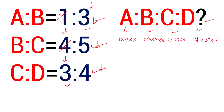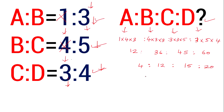Our values on the left are 3, 5, 4. So we get 12 is to 36 is to 45 is to 60. Dividing through by 3: 12 divided by 3 is 4, 36 divided by 3 is 12, 45 divided by 3 is 15, 60 divided by 3 is 20.